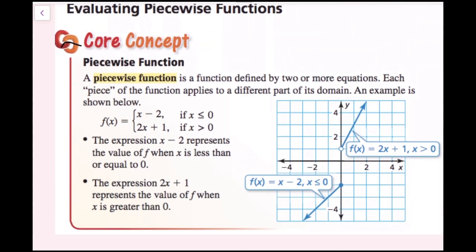A piecewise function is a function defined by two or more equations. Each piece of the function applies to a different part of its domain. For example, f(x) equals x minus 2 if x is less than or equal to 0, and 2x plus 1 if x is greater than 0. The expression x minus 2 represents the value of f when x is less than or equal to 0, and 2x plus 1 represents the value of f when x is greater than 0.